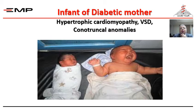Infants of a diabetic mother — they are macrosomic, big babies. You have to exclude that they have hypertrophic cardiomyopathy, exclude a VSD, or conotruncal abnormalities. Conotruncal abnormalities are abnormalities of the trunk — the aorta and the pulmonary trunk as they exit the heart. These include tetralogy of Fallot, transposition of the great arteries, and truncus arteriosus.